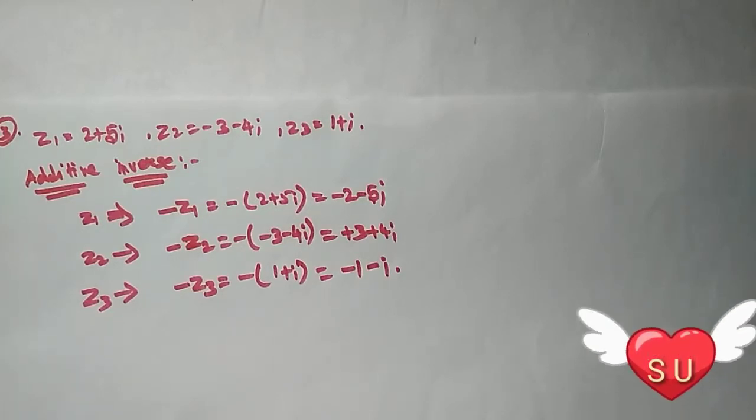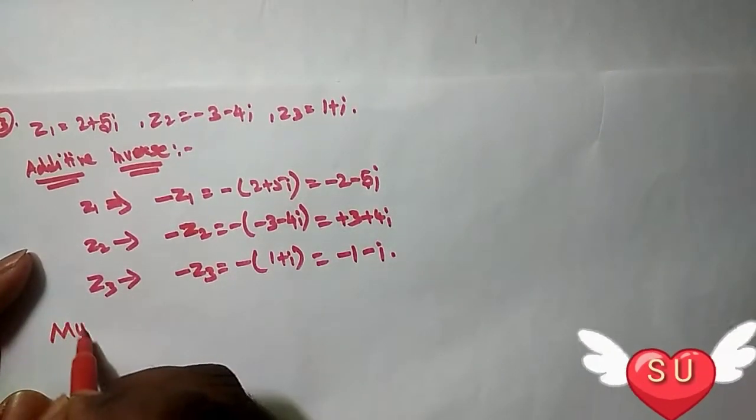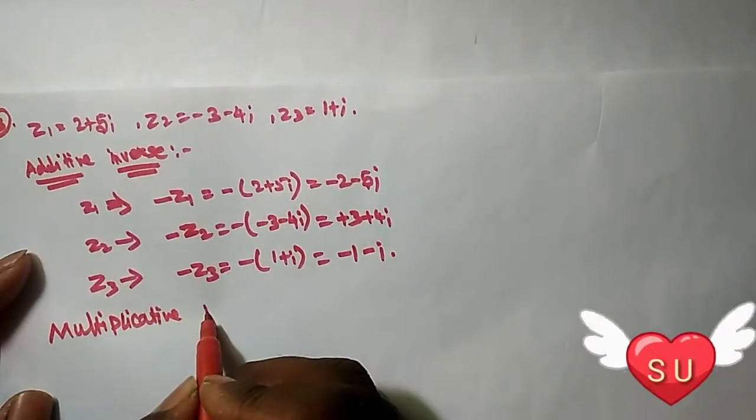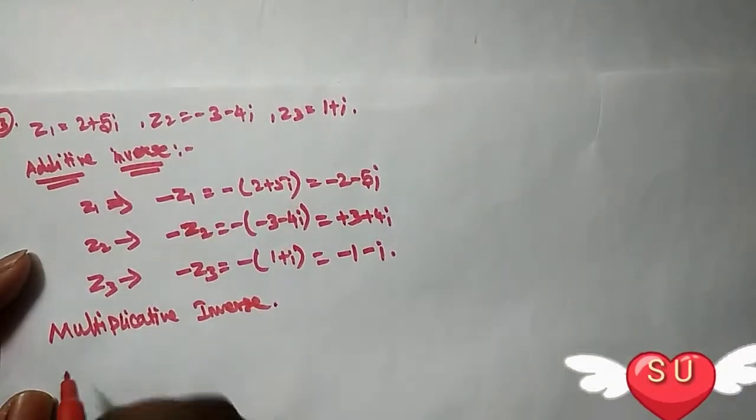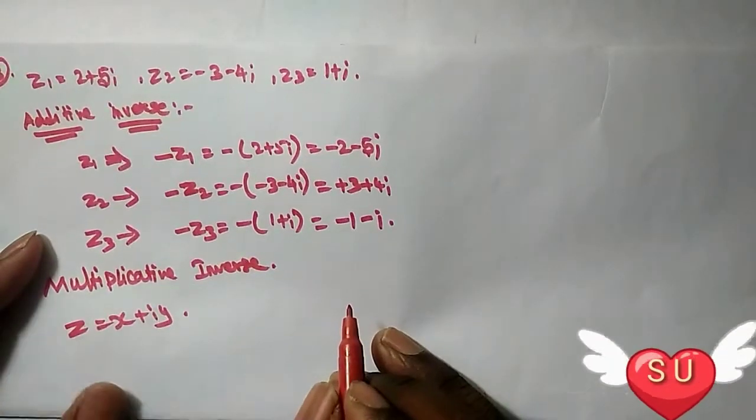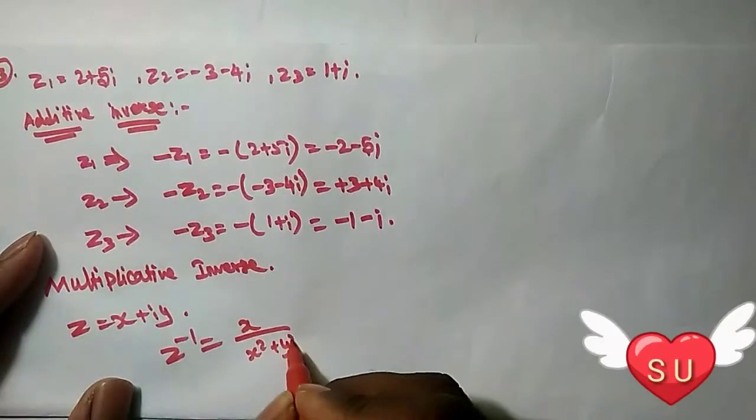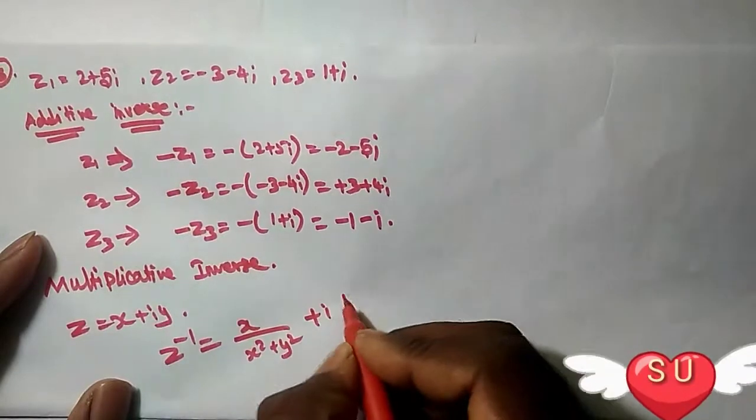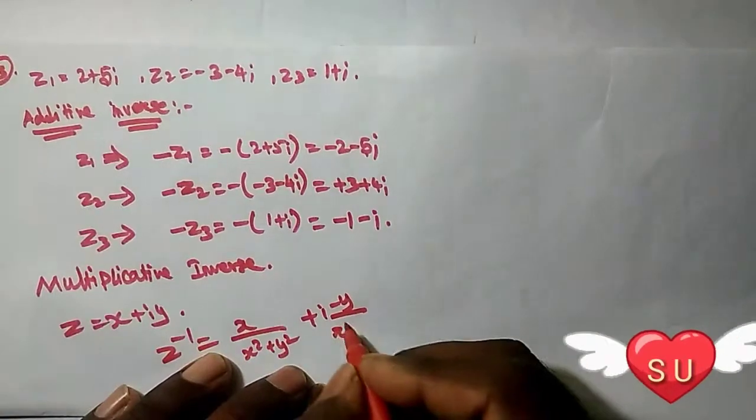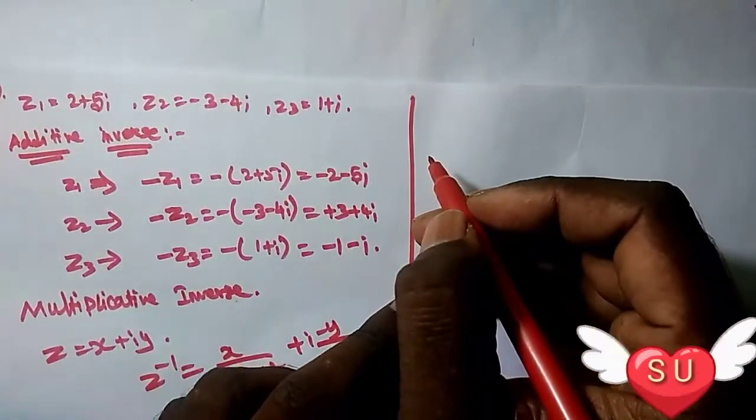Next part is the multiplication inverse. For the multiplicative inverse, the property is: for a complex number z = x + iy, the inverse equals x divided by (x² + y²) plus i times (-y) divided by (x² + y²). So this is the formula.